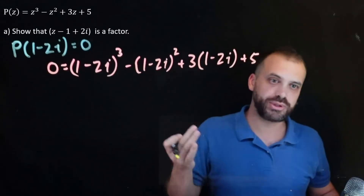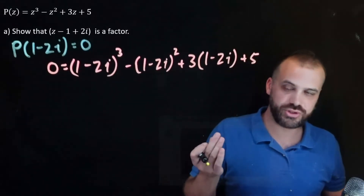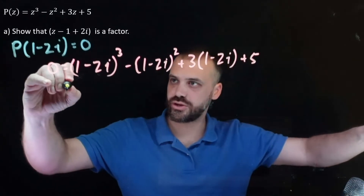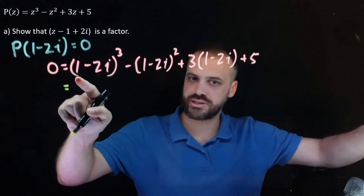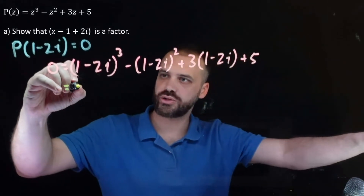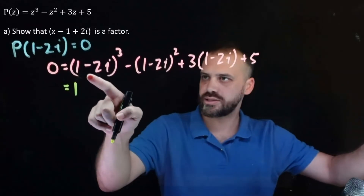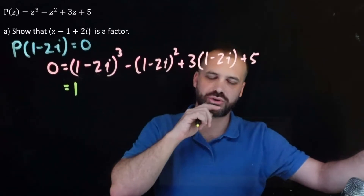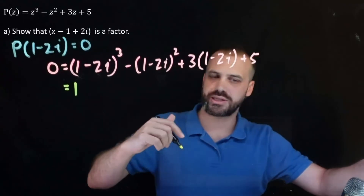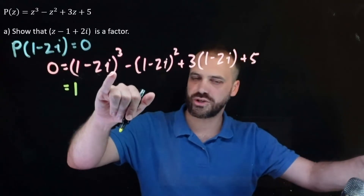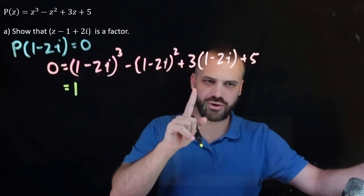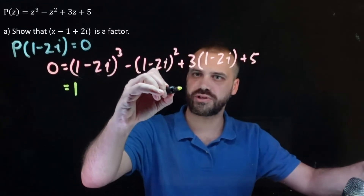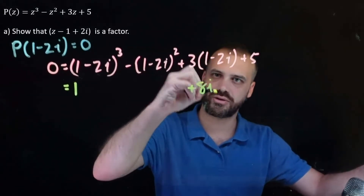If you know your binomial expansion rules it shouldn't be too difficult. This term cubed: 1 cubed is 1. And negative 2i cubed — negative 2 cubed is negative 8, i cubed is negative i — so negative 8 times negative i is positive 8i.